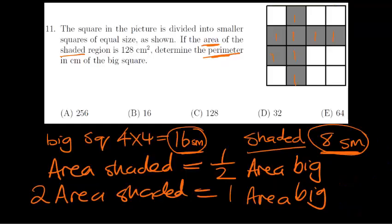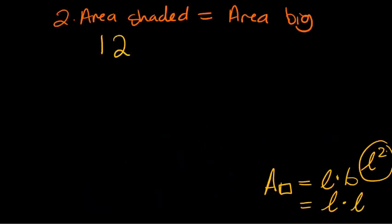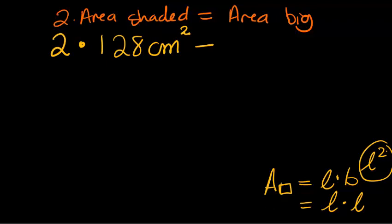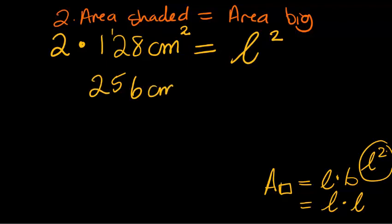Based on the question, they are telling me the area of the shaded area is 128 centimeters squared. So I have 128 centimeters squared, and I multiply this by 2, and that is the area of the big square, which is literally length squared, or side squared. So I can multiply on the left hand side: 128 times 2 is 256 centimeters squared, which equals length squared.